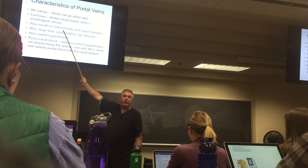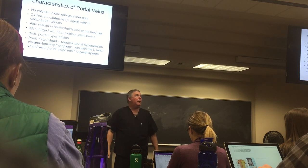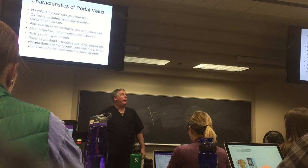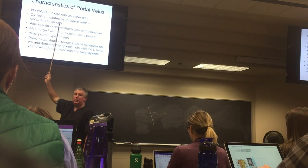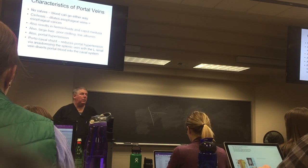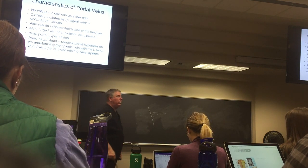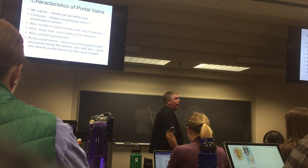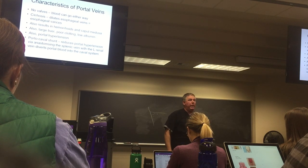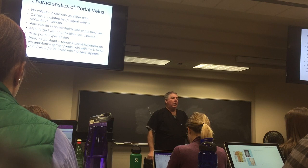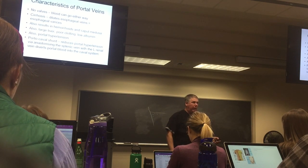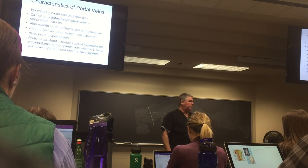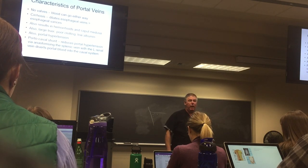Varicose veins around your anus are hemorrhoids. Varicose veins around your esophagus are called esophageal varices. Now the problem with cirrhosis is the liver makes a lot of important stuff — one being all of the vitamin K-dependent clotting factors to clot your blood.